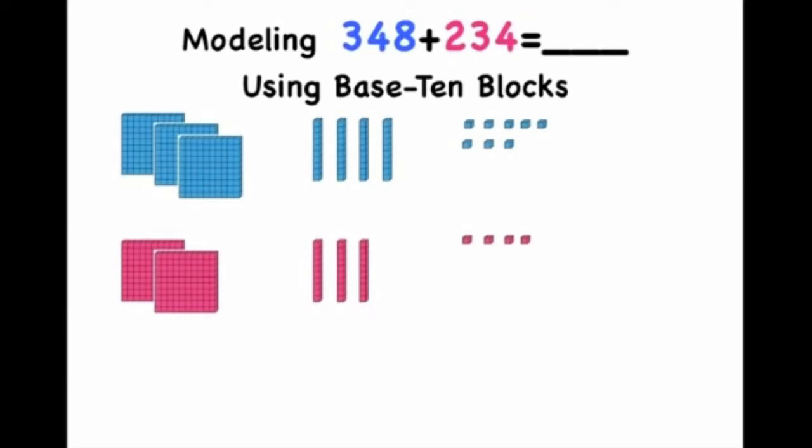Now because we're super smart mathematicians, we have to organize our base 10 blocks in rows of five because that makes them easier to count. So let's start with our ones. Now that we have our ones organized in rows of five, let's look at our tens. Now that our tens are organized in rows of five, let's organize our hundreds.